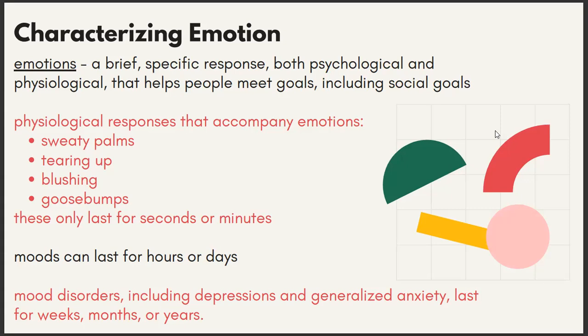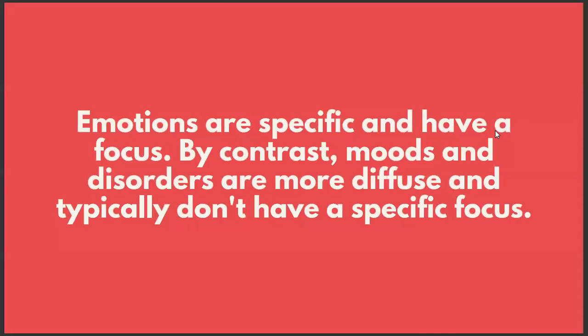Moods can last for hours or days — that time difference is the main distinction between emotions and moods. Mood disorders, including depression and generalized anxiety, can last for weeks, months, or years. So it's not an emotional disorder — it's a mood disorder. The key takeaway is that emotions are specific and have a focus. By contrast, moods and disorders are more diffuse and typically don't have a specific focus.